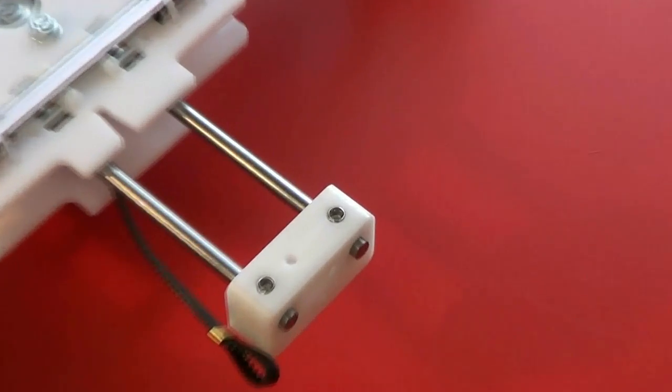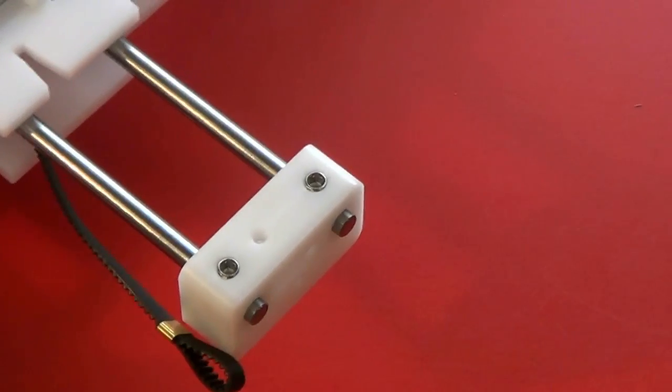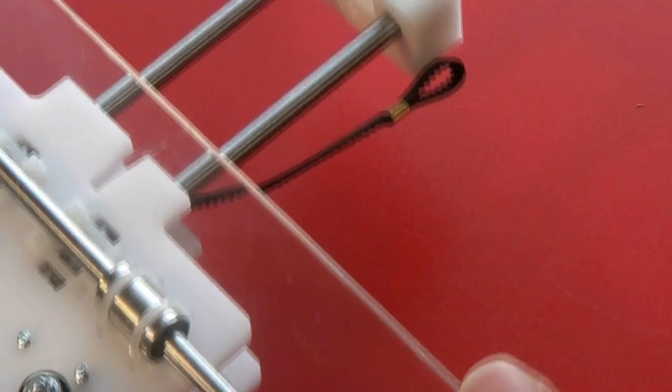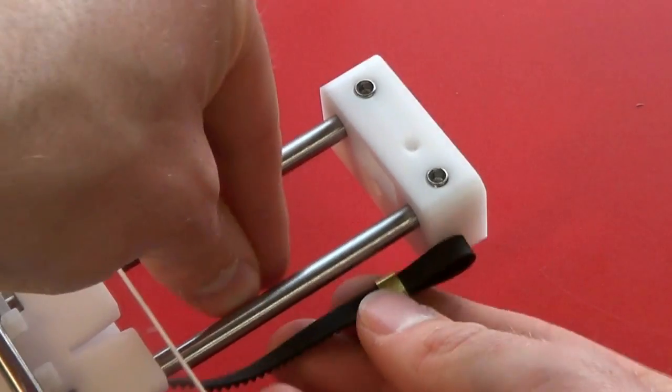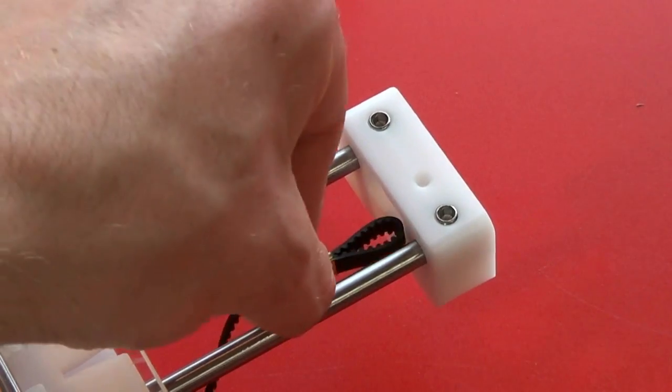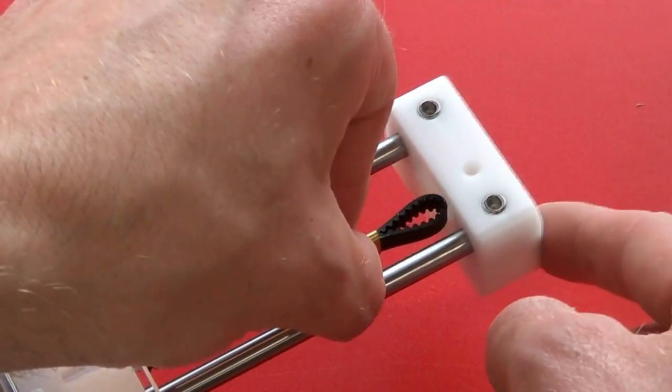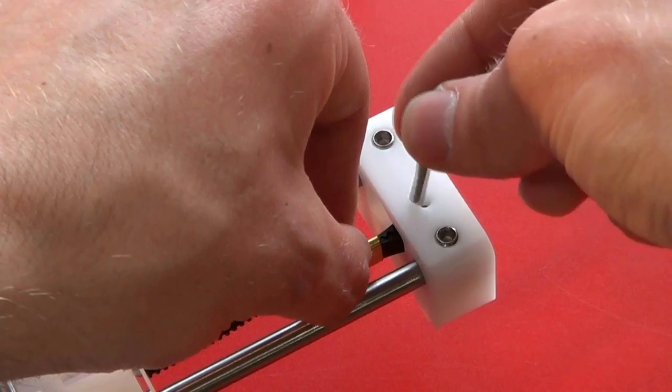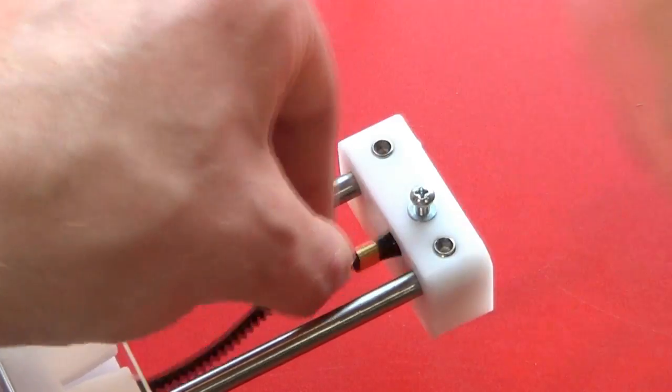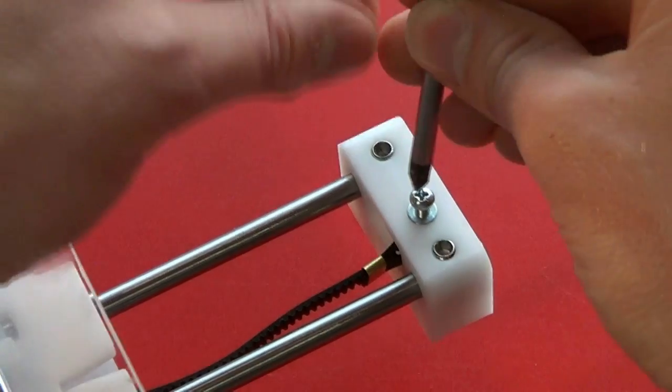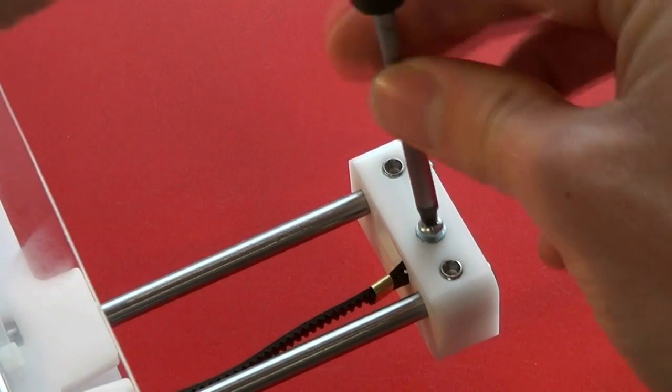I'll zoom in a little here. Secure the front end of the Y belt. The loop goes into the recess here, and then the screw falls down through the top. Tighten that using the PosiDrive No. 1 screwdriver.